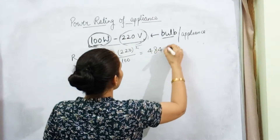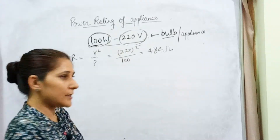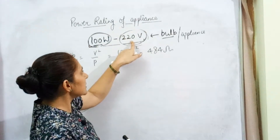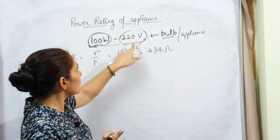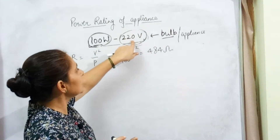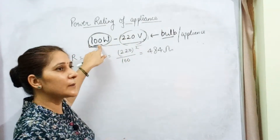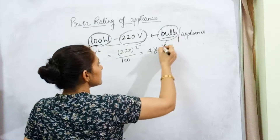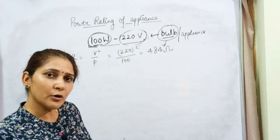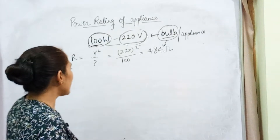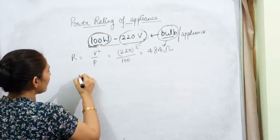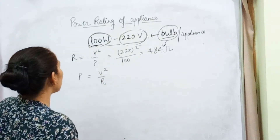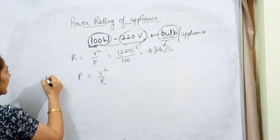When calculated, it is 484 ohm. Now what I am saying is: if this potential difference is decreased — means when the bulb is not working at 220V but is working at less than this — then what will be the power consumed? So for this bulb, the resistance is 484 ohm. We can find out power using the formula P = V²/R.